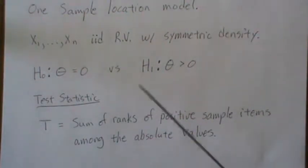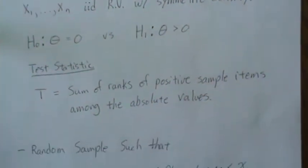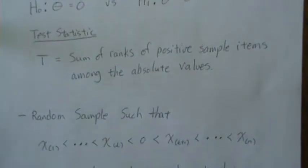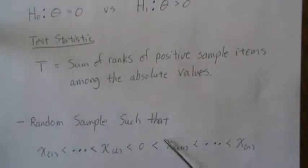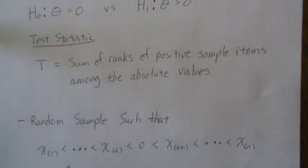I have a couple videos on the signed rank distribution which may also be helpful in this case. Here we have a random sample, and then we order them, and the number in parentheses means that they're ordered somehow.